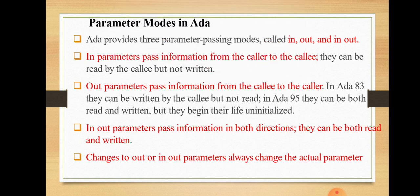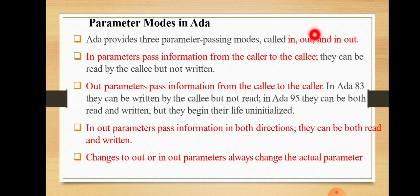Next is the parameter mode in Ada, which is a frequently asked university question. Ada provides three parameter passing modes: 'in', 'out', and 'in out' mode. Instead of using the terms call by value or call by reference, Ada uses the designations in-mode, out-mode, and in-out-mode. In-mode parameters pass information from the caller to the callee; the formal parameter takes the value of the actual parameter and can be read by the callee but not written.